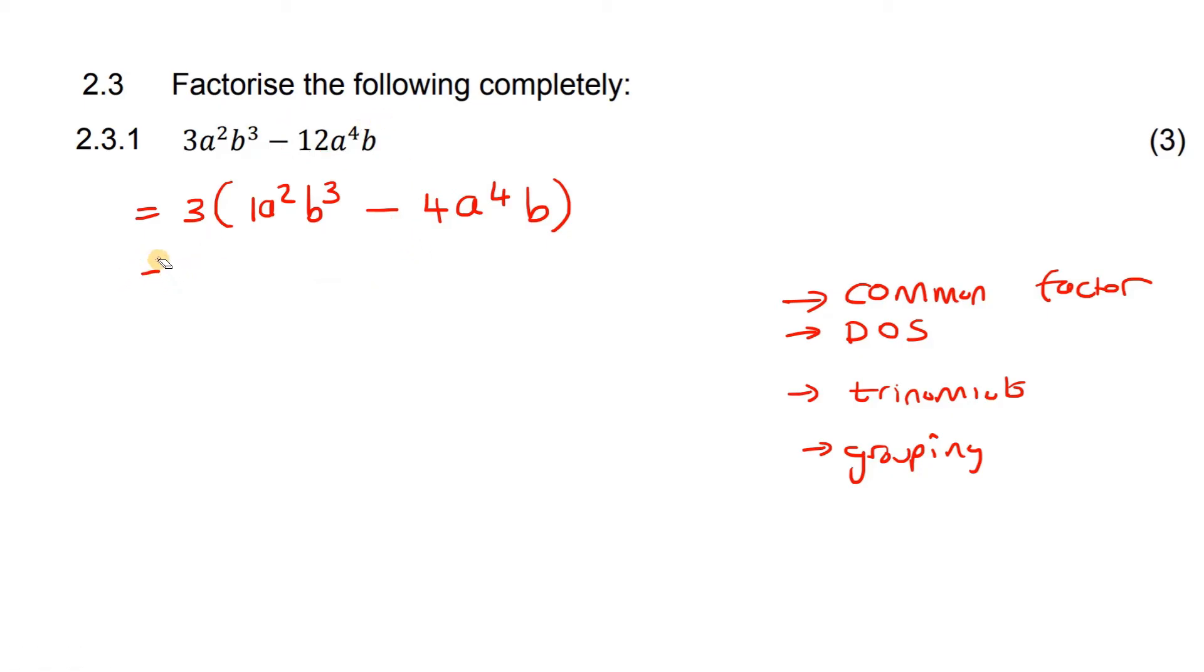Now, we need to look at the letters. Here we can see we've got two a's, and here we can see we've got four a's. So you can take out the smallest number, which is two a's. And then here we've got three b's, and here we've got one b. So we can always take out the smallest number, which is one. Now, let's see what we have left. If you look over here,